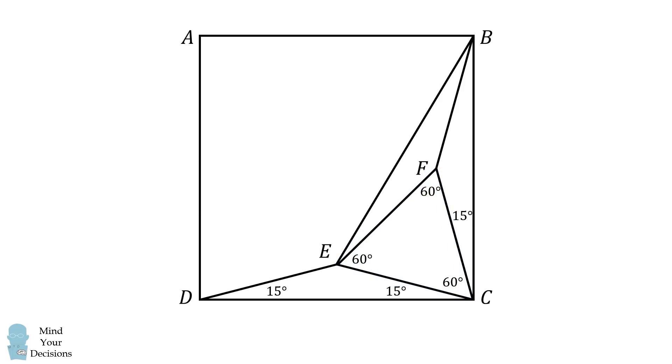From here, we will calculate the measure of angle BFC. We know that FBC is equal to 15 degrees, so we can calculate the remaining angle in the triangle is equal to 150 degrees. We then have the three angles around point F must sum to 360 degrees, so we can calculate that EFB is also equal to 150 degrees.